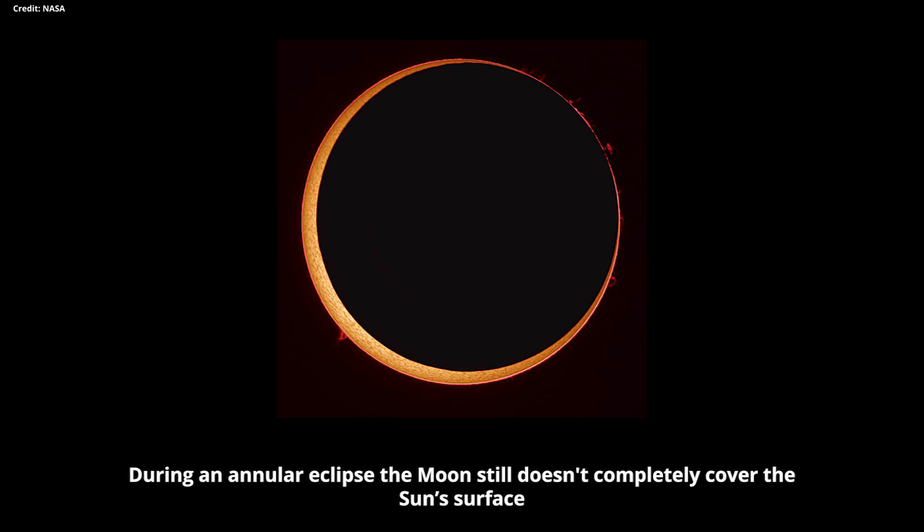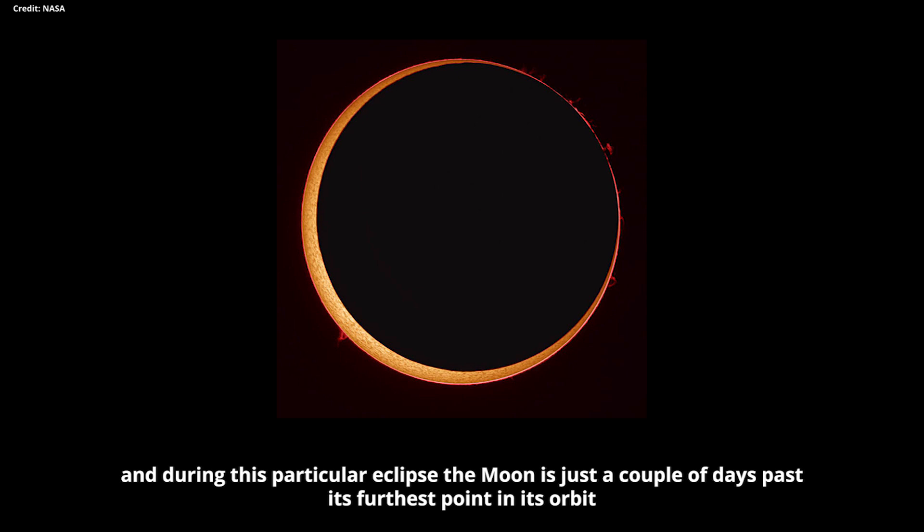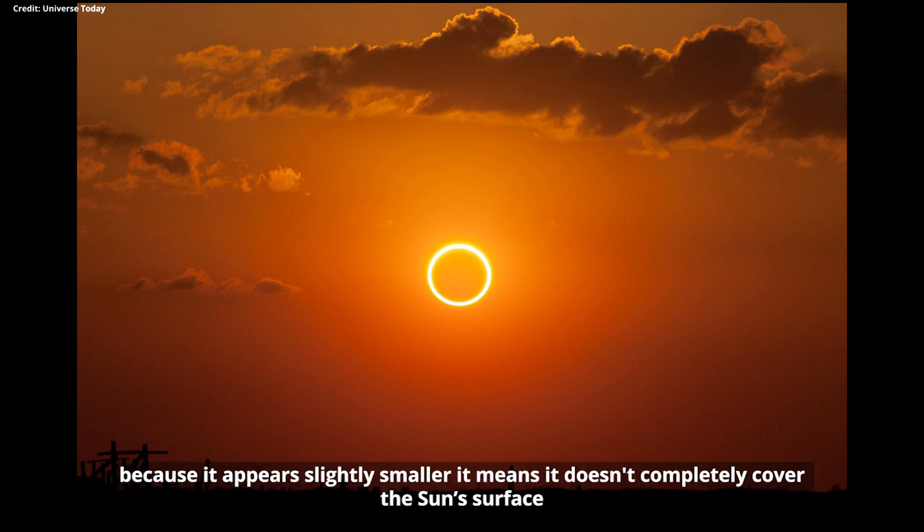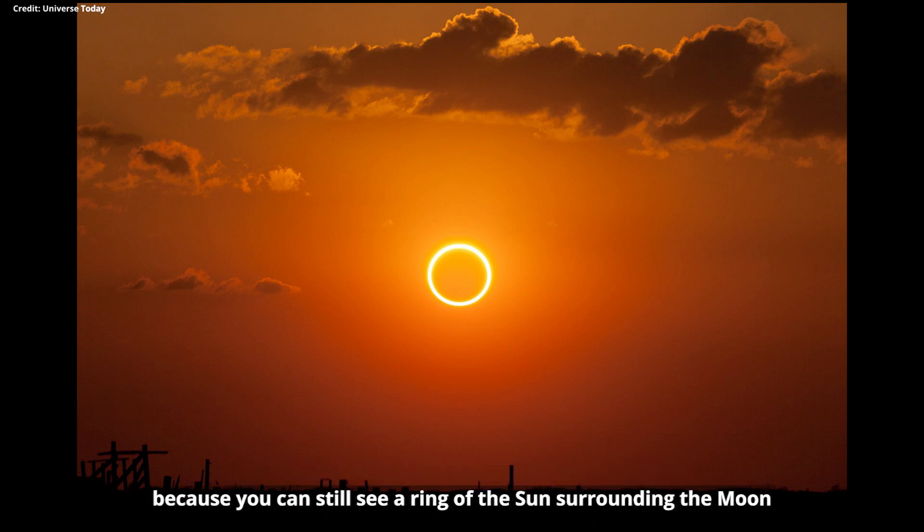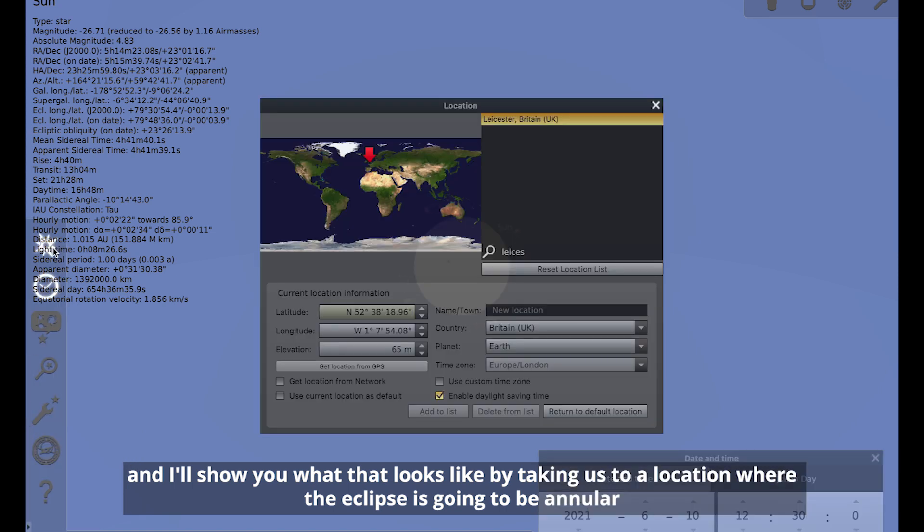During an annular eclipse, the moon still doesn't completely cover the sun's surface. And the reason that that happens is because the moon's orbit isn't circular. So it doesn't always appear the same size to us. And during this particular eclipse, the moon is just a couple of days past its furthest point in its orbit, meaning it appears slightly smaller than it does at other times. Because it appears slightly smaller, it means it doesn't completely cover the sun's surface. And we get what's known as an annular eclipse, sometimes known as a ring of fire eclipse.